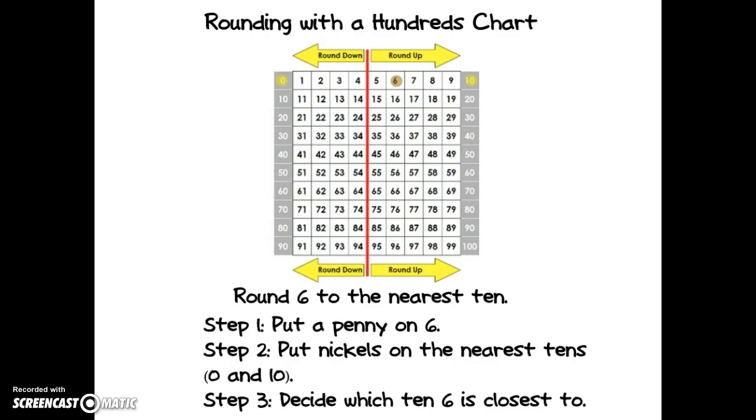If I count from six to ten, I count seven, eight, nine, ten. It's four places. And if I count from zero to six, I count one, two, three, four, five, six. That's six places. So six rounds to ten instead of zero.